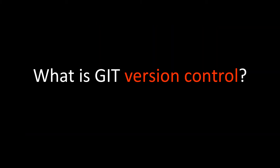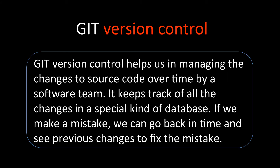Then comes another question: what is git version control? Git version control helps us in managing the changes to source code over time by a software team. Whenever we have multiple team members who keep on changing the source code, we want to maintain a series of changes, maintain the history, and track all the changes — all of which go into a special kind of database.